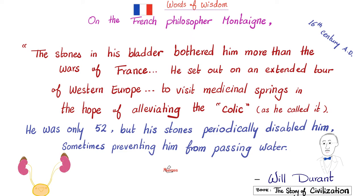First, you ask a few questions to get the diagnosis right. Once you confirm it's kidney stones, take care of them, and then we can figure out what kind of stones they are — whether they form in an acidic medium or an alkaline medium, whether they measure less than 5 millimeters or more than 5 millimeters. All of this can wait.